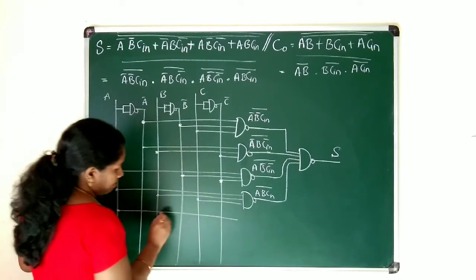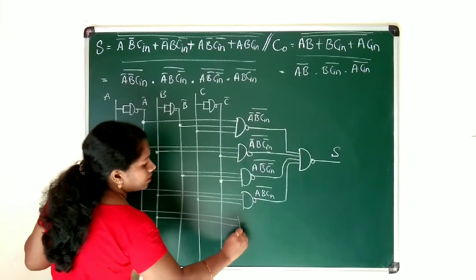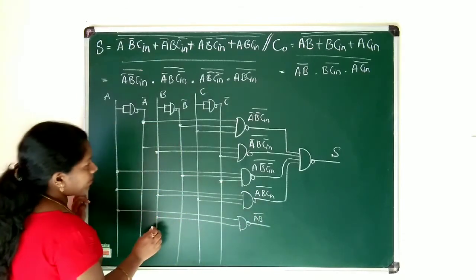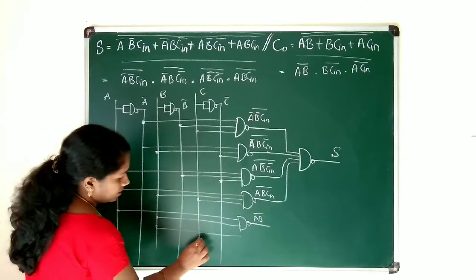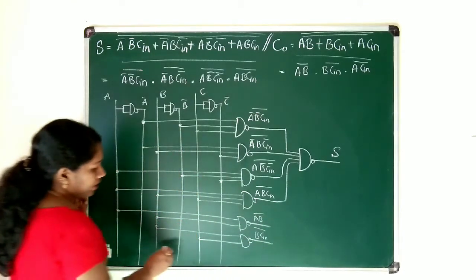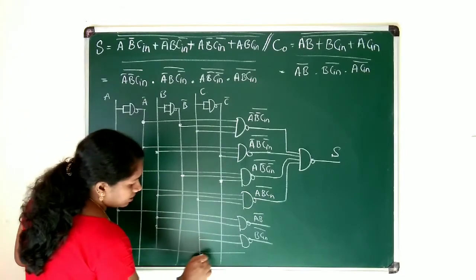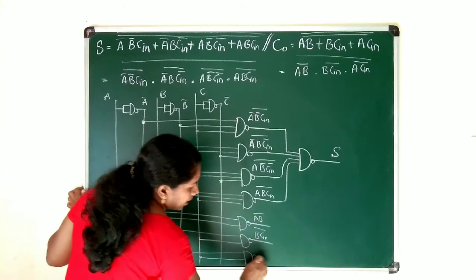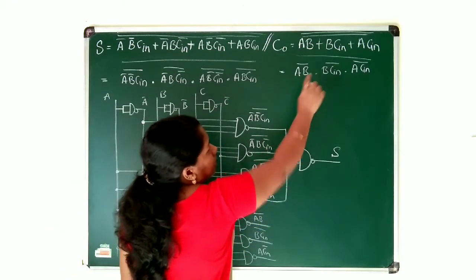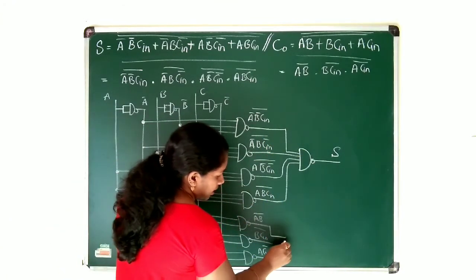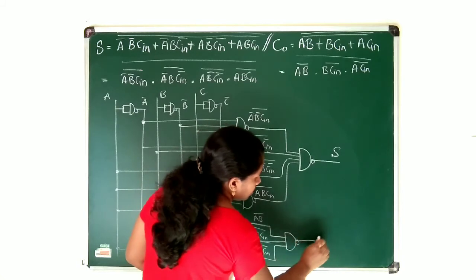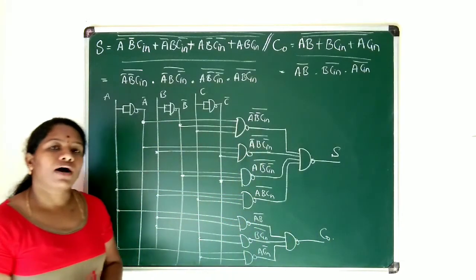Next is carry out. Take a and b into a NAND gate to get (ab)̄. Take b and c_in into a NAND gate to get (bc_in)̄. Take a and c_in into a NAND gate to get (ac_in)̄. All three terms are connected with dot and complement, so use one more NAND gate — that gives the carry-out output.